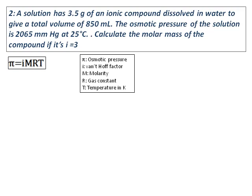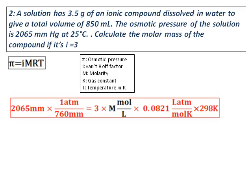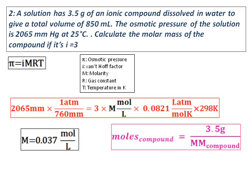Use the formula to calculate the molarity of the solution. Molarity is moles per liter. The moles of the compound equal mass divided by molar mass. Since mass is 3.5 grams, moles = 3.5 g / molar mass.